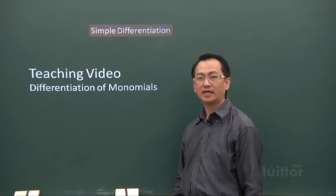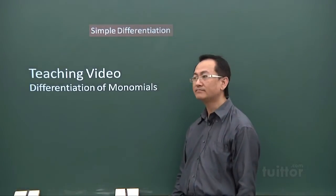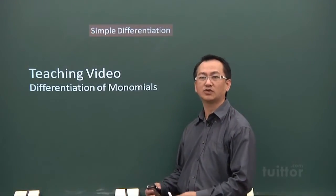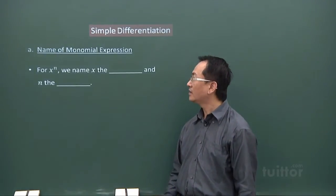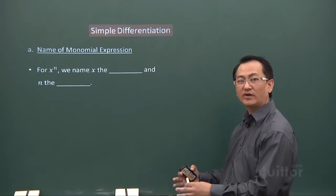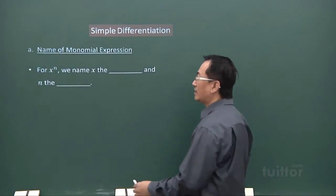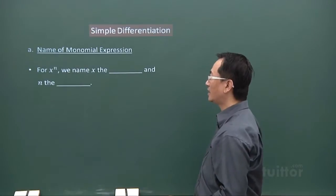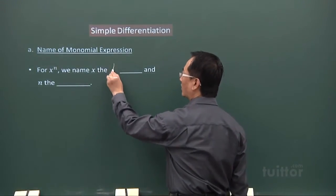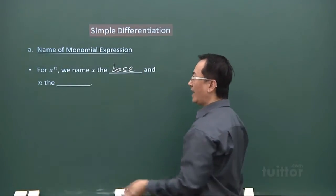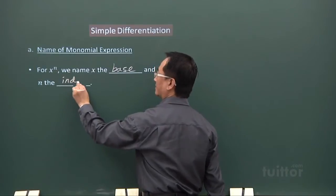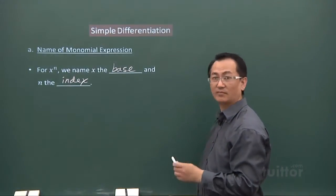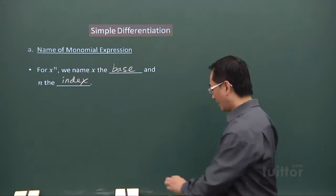We're now looking at a teaching video — this is the start of your differentiation. We look at monomials; hopefully in future videos we build it up to polynomials and other functions as well. A monomial refers to just a single term, so let's look at a single term like X to the power of n. X is what we call the base, and n here is the index.